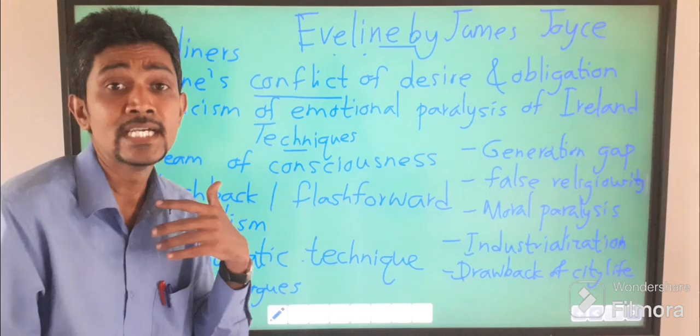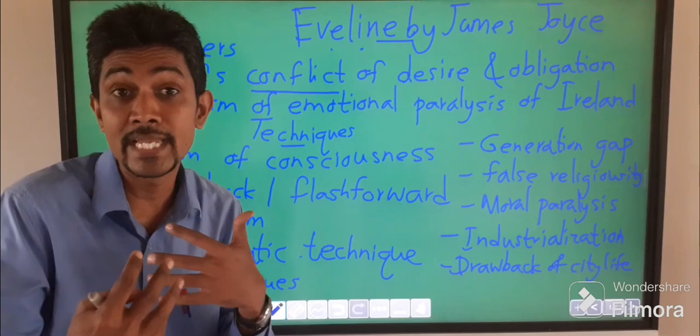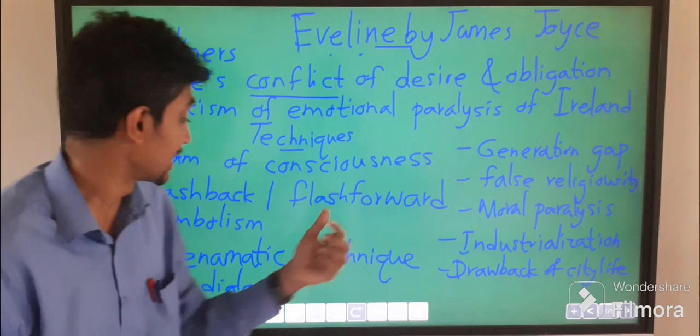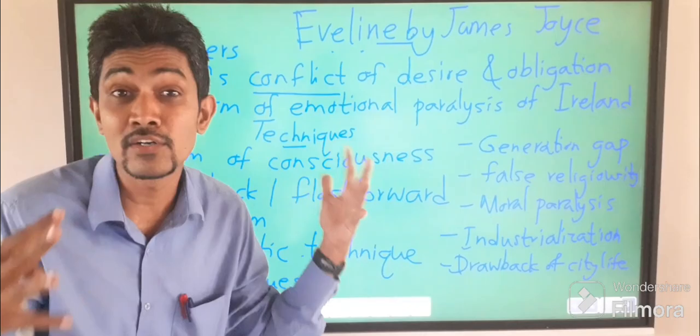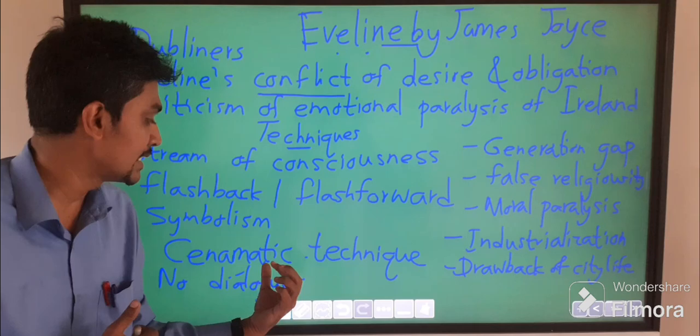Another technique is the flashback. Evelyn's mind goes back and goes forward — it is not in a particular line of narration; all the incidents go here and there. That is about the flashback. Evelyn's mind also thinks about future things, and that is the flash forward technique. We also find symbolism — broken harmony — that is about the stagnancy and decaying situation. Depressing conditions can be visualized through the technique of symbolism.